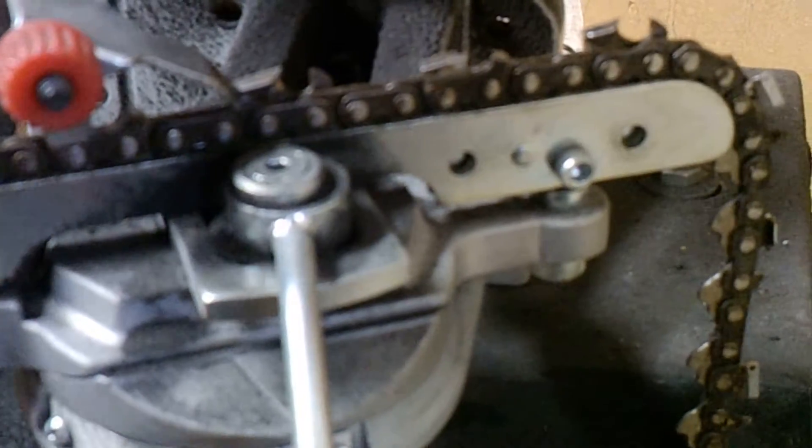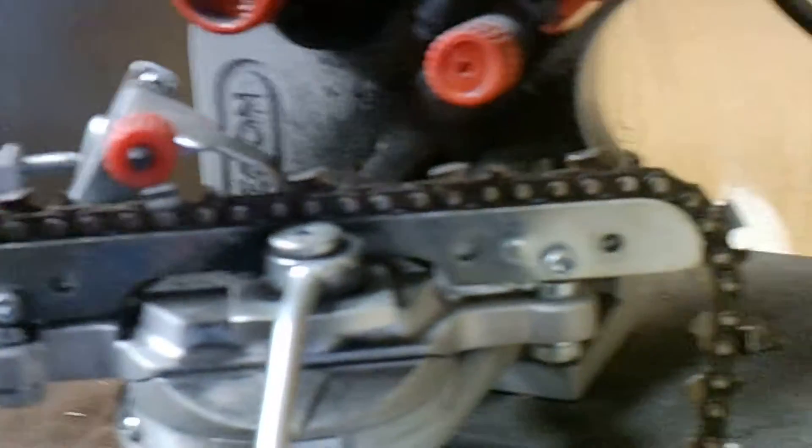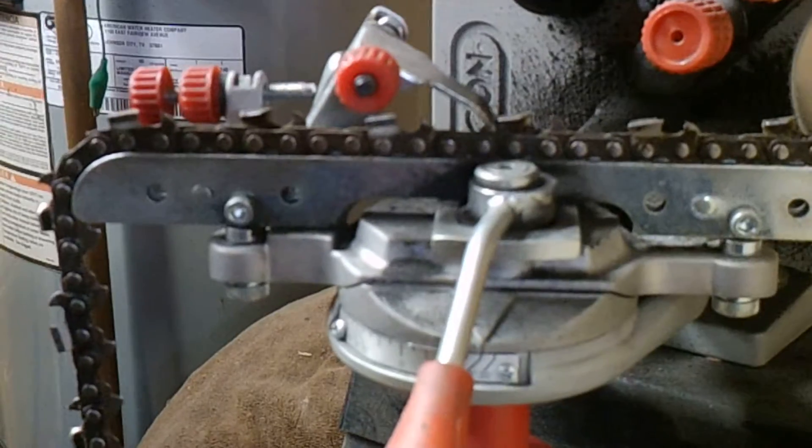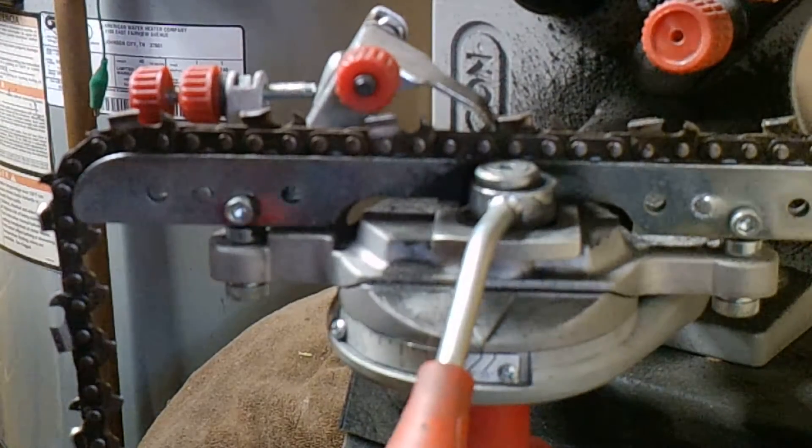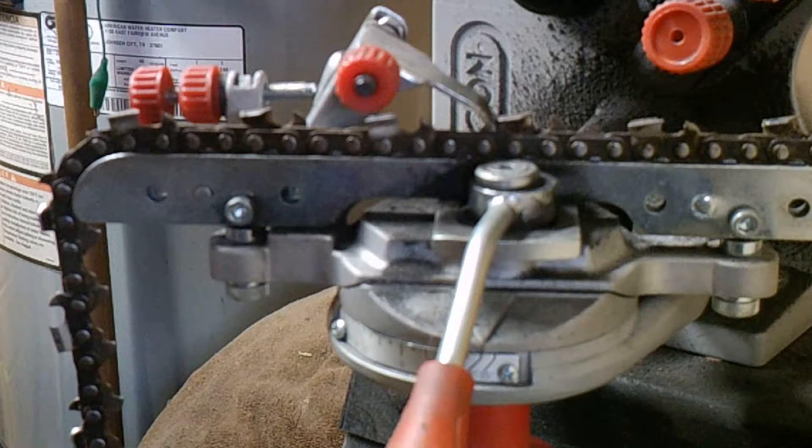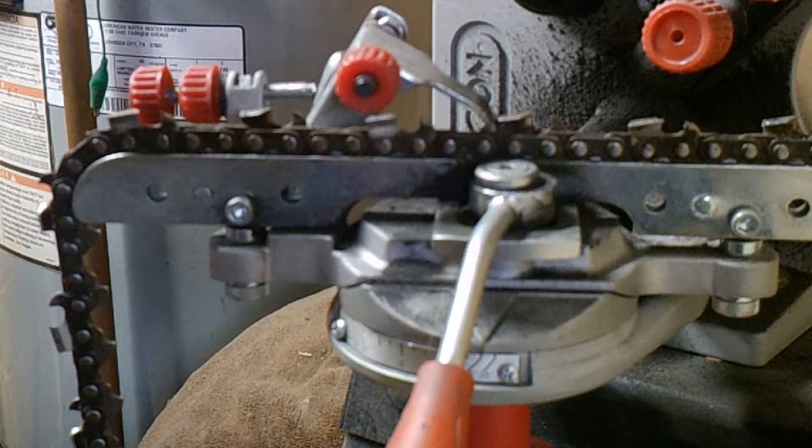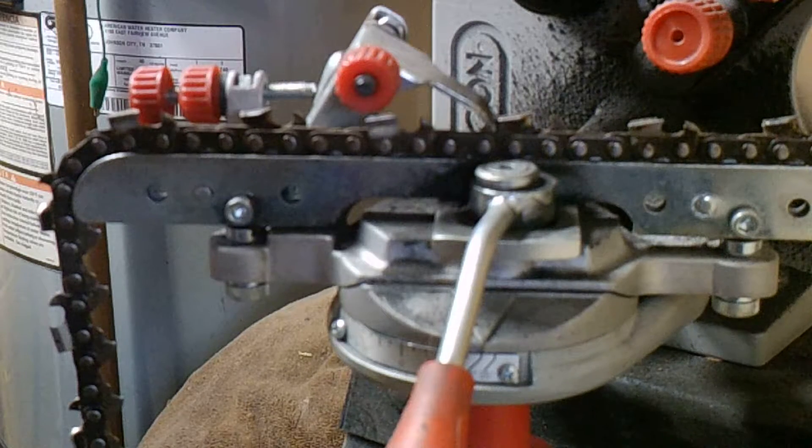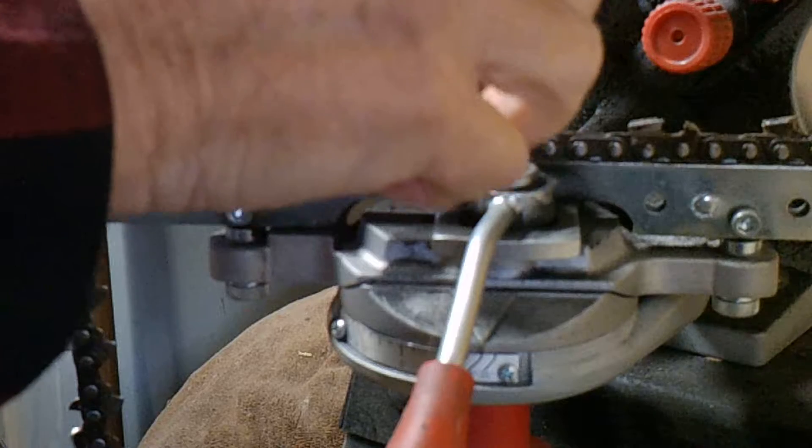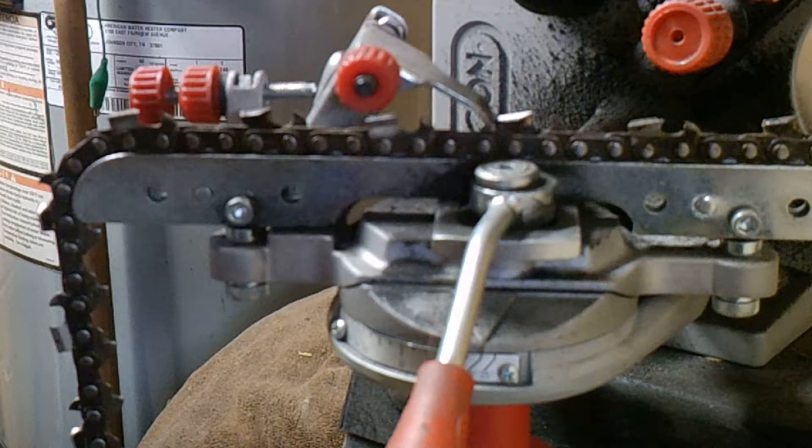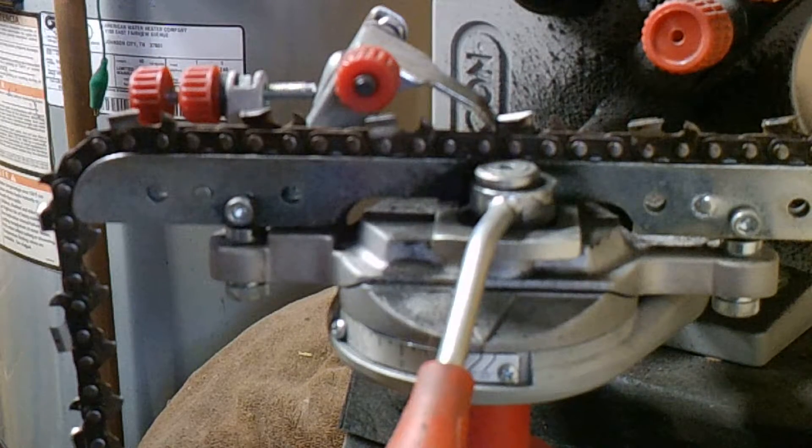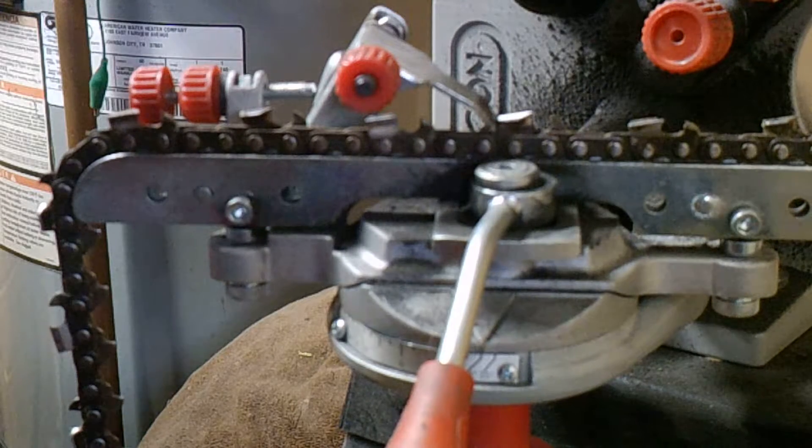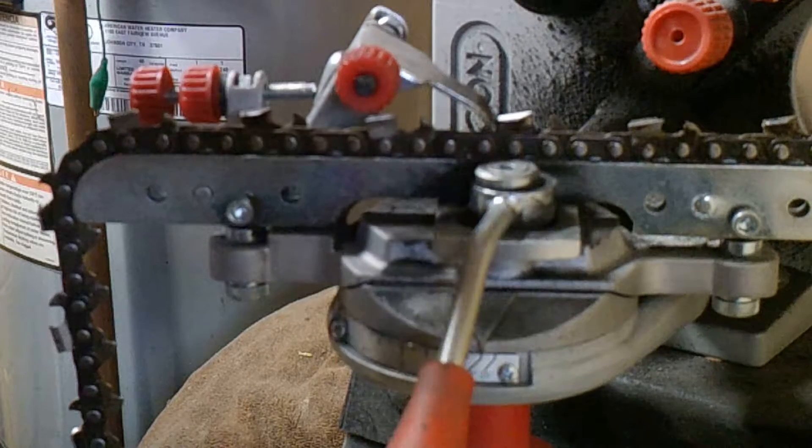So the best way so you can see, what I always do is my first tooth. I got me a little bottle of this white-out and I always mark this first tooth. Then I know when I get around to the other side, I know when I've done that one whole side of chain.